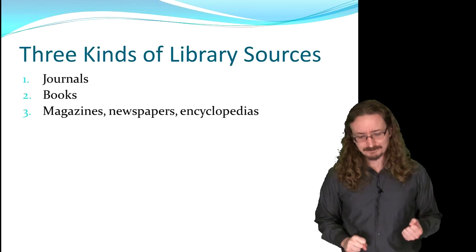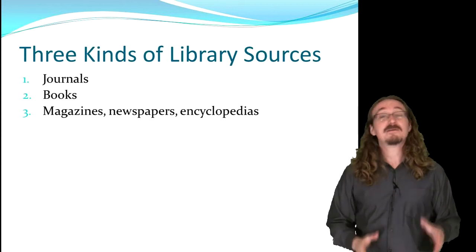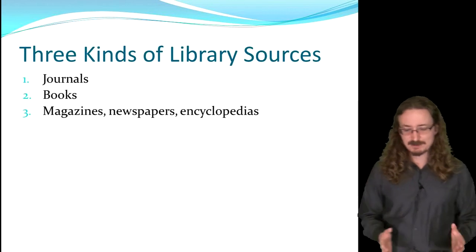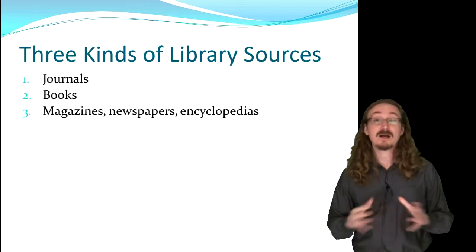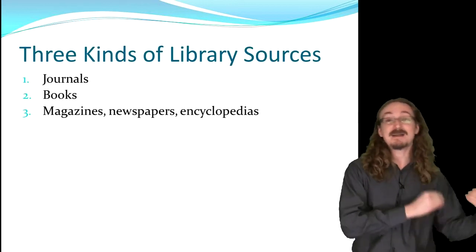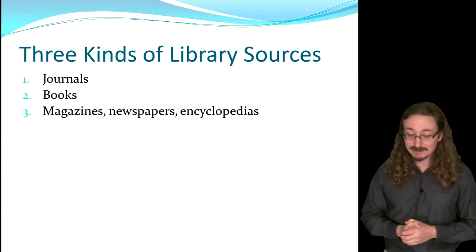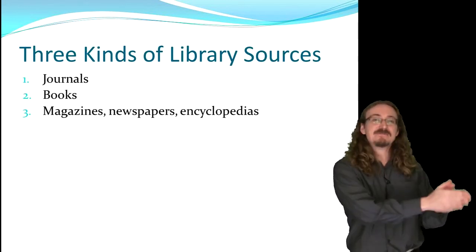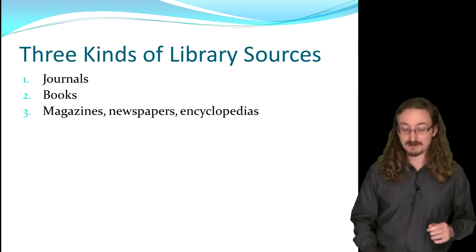Second are books — great for getting general information about a topic or when using older information is acceptable. Third are magazines, newspapers, and encyclopedias. These will typically not be acceptable in a college-level essay. It's fine to read them to learn about the topic, but when providing evidence for your claims, no professor will be happy to see Encyclopedia Britannica, Wikipedia, a newspaper article, or Time Magazine. That's high school-level research — we need to move up to journal articles and scholarly books.